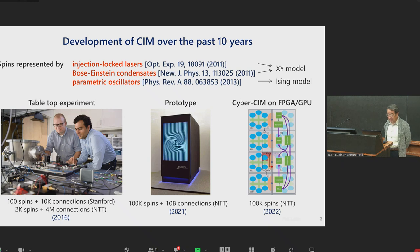As for the hardware development, in 2016, 100 spins all to all connected with 10,000 weights was demonstrated at Stanford. The same year, NTT demonstrated a slightly larger machine with 2,000 spins all to all connected with 4 million weights. As for the prototype, last year NTT announced 100,000 spins all to all connected with 10 billion weights. If CIM differential equation ODE is implemented as a heuristic program, either on FPGA or GPU, we can construct a machine on cyberspace. This cyber CIM with 100 spins with sparse connection was also demonstrated at NTT.